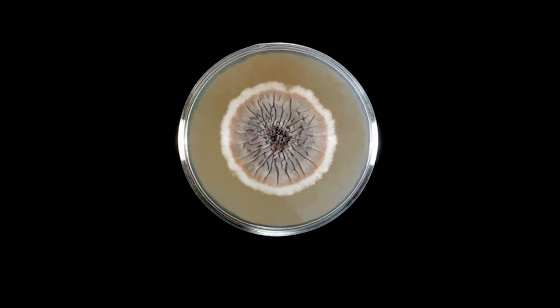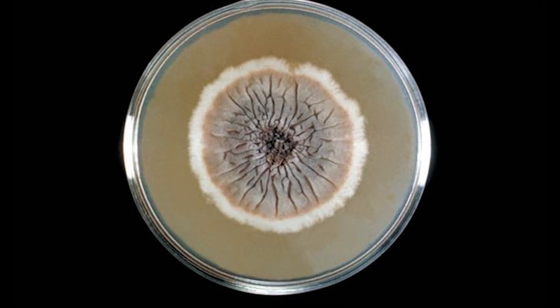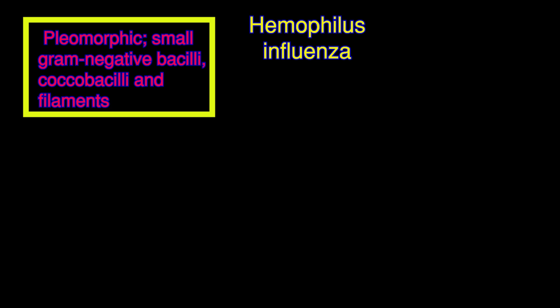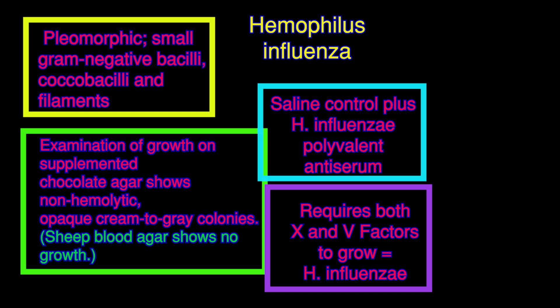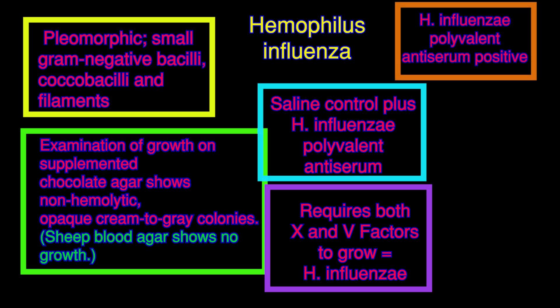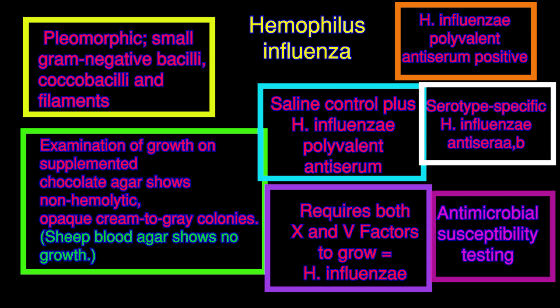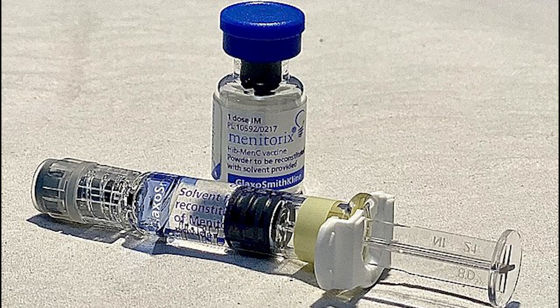Sabouraud's dextrose agar and brain heart infusion with 5% sheep blood are incubated at 30°C for four weeks for fungal culture. Haemophilus influenzae is the causative agent of diseases such as pneumonia, meningitis, otitis media, and conjunctivitis. Meningitis caused by H. influenzae occurs almost exclusively in children under 5 years of age, and most invasive disease is caused by the type B polysaccharide capsule organism, commonly abbreviated as Hib. Conjugate vaccines are available to prevent H. influenzae serotype B.